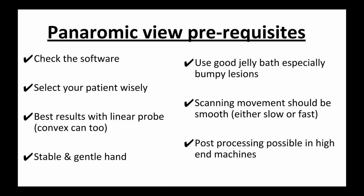What are the prerequisites for having a panoramic view? You have to check whether you have the software in your machine. Select your patient wisely — difficult patients with bumpy areas will make it hard. Best results are obtained with a linear probe; a convex probe can also be used. The most important technique is a stable and gentle hand, a good jelly bath for bumpy lesions or areas with acute or obtuse angles, and scanning movement should be smooth. Some people prefer scanning slowly, some prefer doing it fast, but whatever movements you make have to be smooth.